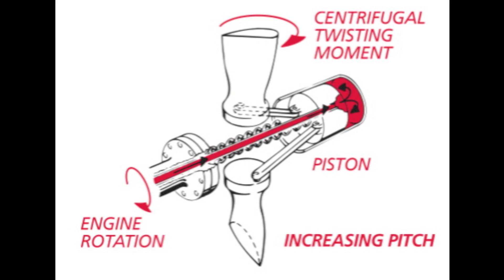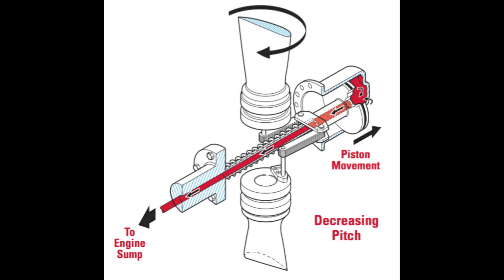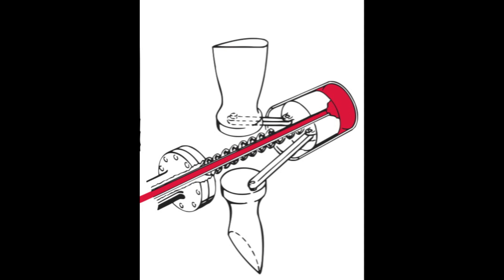Let's look at the forces acting on the constant speed propeller. As the engine rotates the propeller — since it's not fixed — there is a twisting force called centrifugal twisting moment. This makes the propeller go to a low pitch if it wasn't attached to anything else. But the propeller is attached to something which allows us to move it and overcome this twisting moment. To move the propeller blades, we attach each blade to a piston inside a dome containing oil. The linkage between the piston and the propeller is called the actuating link, attached at either end using pins. When the piston moves, the actuating link then moves the propeller.